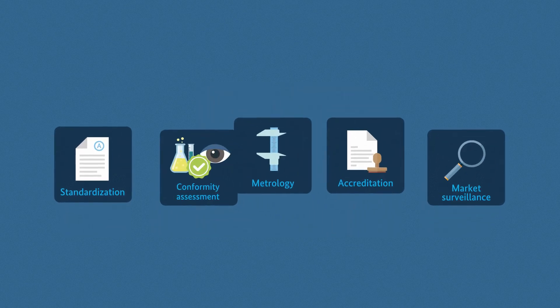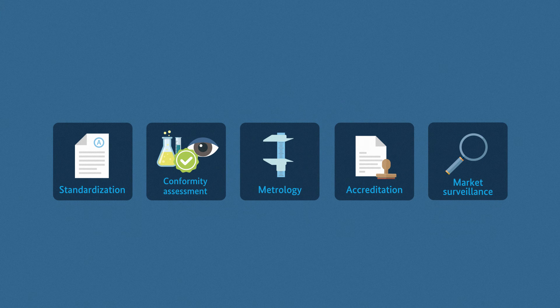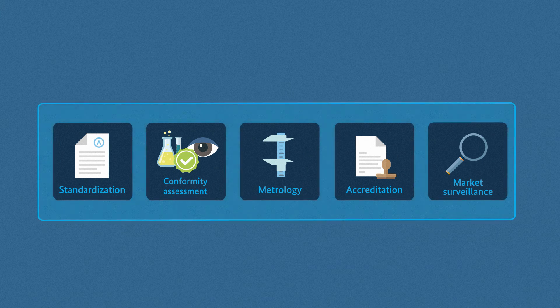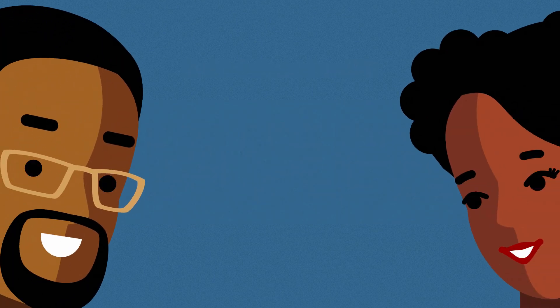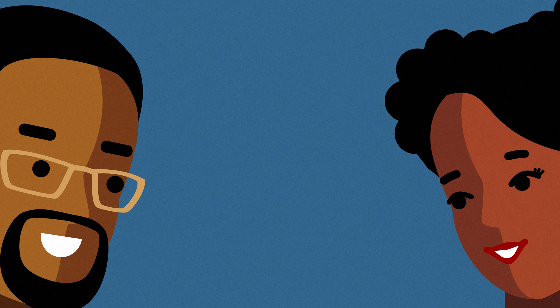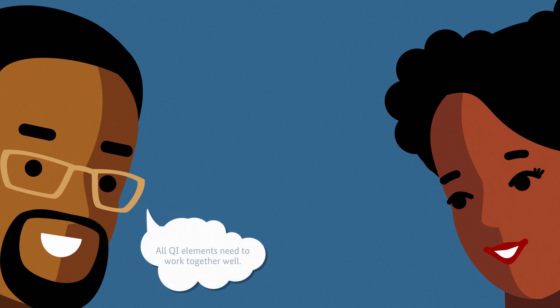Standardization, conformity assessment, metrology, accreditation, and market surveillance are the five elements that make up quality infrastructure. Quite a complex network — and obviously, to ensure that our lives are safe and healthy, all QI elements need to perform well.